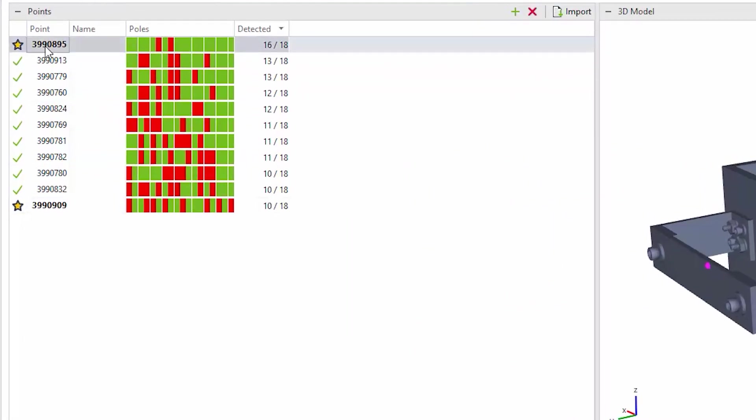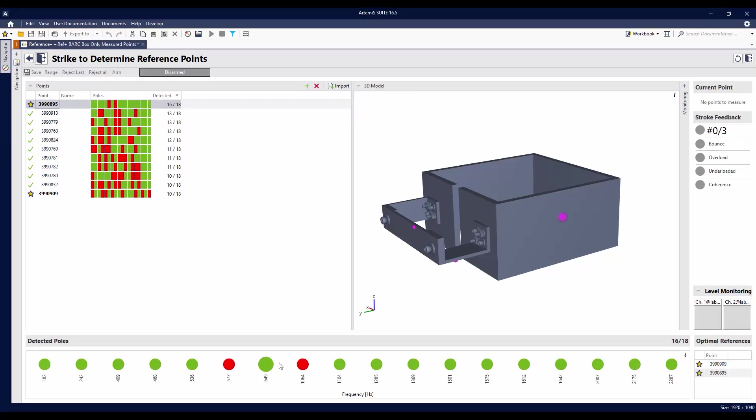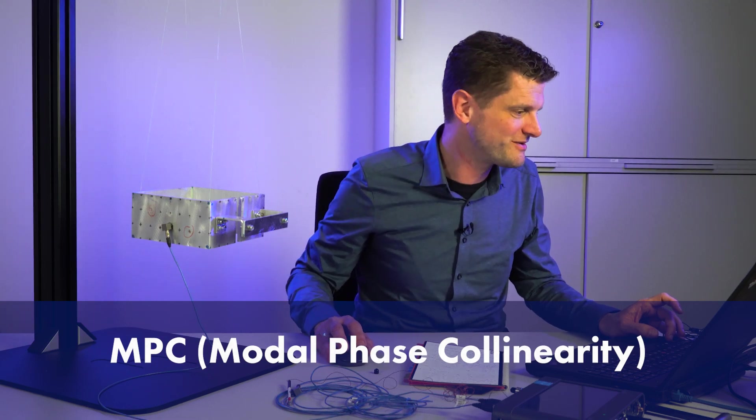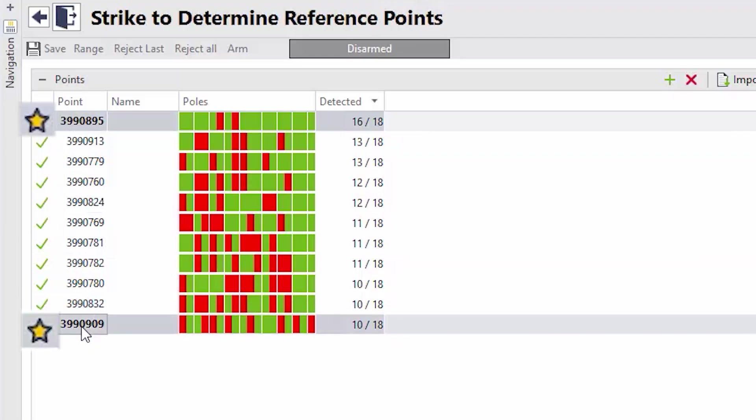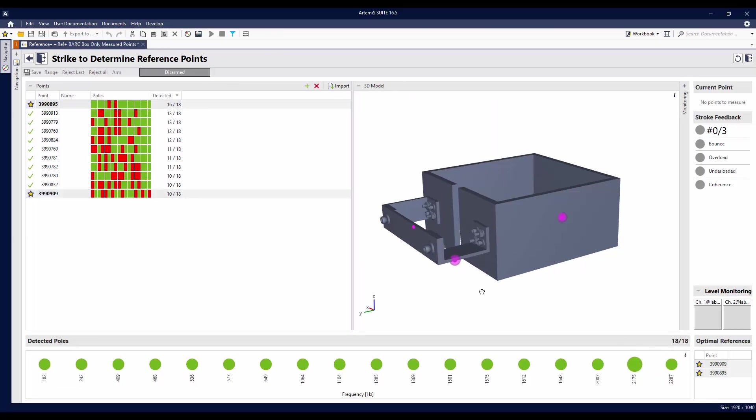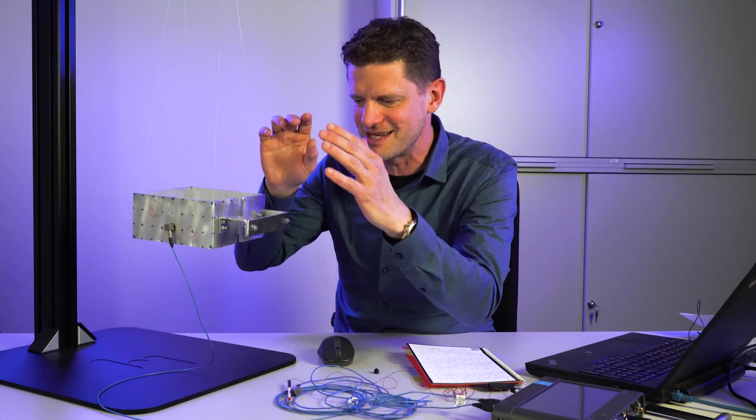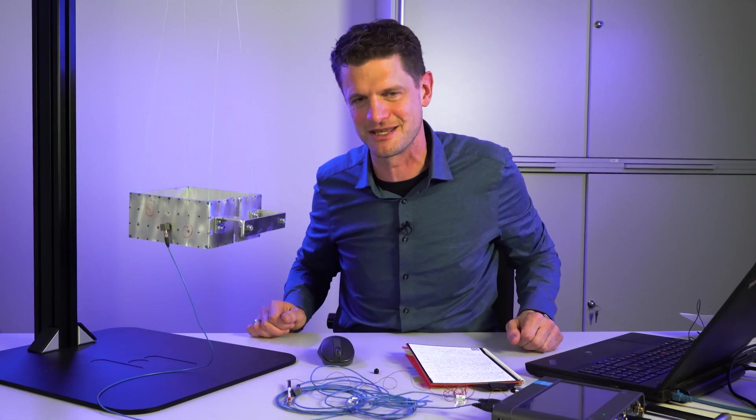For example, if I go for that point here, you can see 16 of 18 modes can be determined with this reference in good quality. But two modes suffer from bad signal. Other points can reveal these modes. But with them, other modes are likely to end up in maybe a bad phase relation with a low MPC. So the artificial intelligence gives me now the good advice. Take this, that's why there's a star, and combine it with that. And then you get all the 18 modes clearly. So this is the advice to place the reference point for this object. Just a few strikes and you get this good advice.